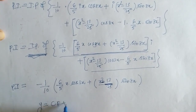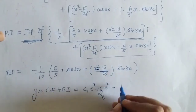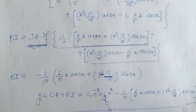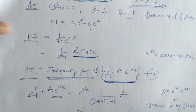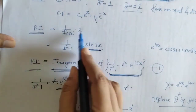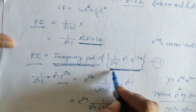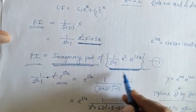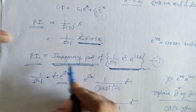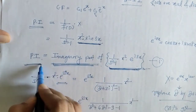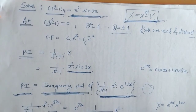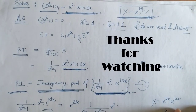So PI is the imaginary part, giving us the expression we computed. The complete solution is y = CF + PI. To summarize: we identified the equation is of the form x^m · sin(ax), wrote PI as the imaginary part, solved using earlier cases to separate i terms, and obtained the required PI. That's it for now — see you in the next video, thank you, keep watching.